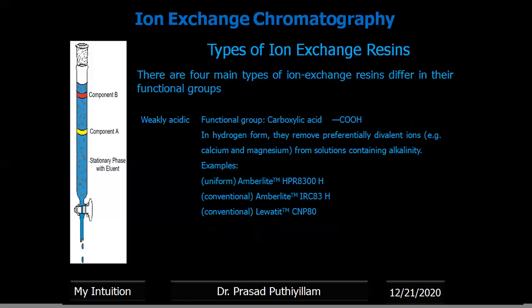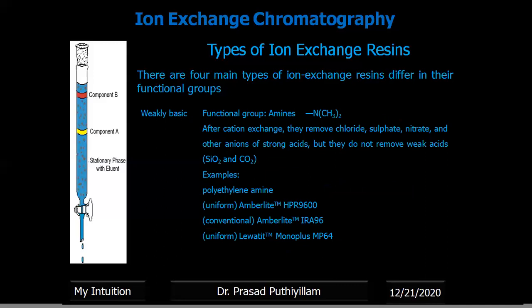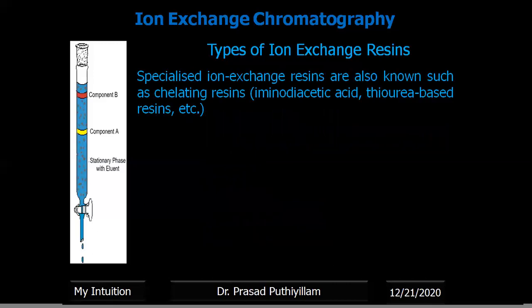Weakly acidic ion exchange resins contain a carboxylic acid functional group (–COOH) in hydrogen form. They preferentially remove divalent ions such as calcium and magnesium from solutions containing alkalinity, and can convert alkaline water to normal water. Weakly basic ion exchange resins contain amines — usually a secondary amine with a dimethylamine structure. After cation exchange, they remove fluoride, sulfate, nitrate, and other anions of strong acids, but do not remove weak acids like SiO₂ and CO₂.